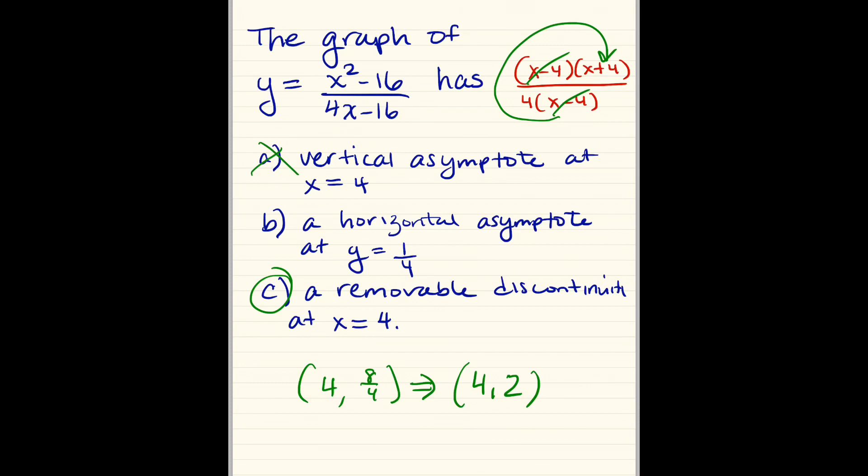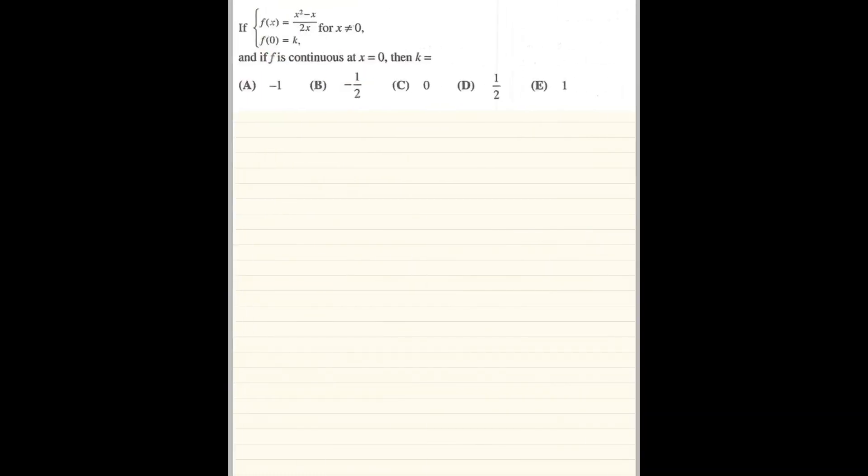So we have a removable discontinuity at x equals 4. We don't have a vertical asymptote. We would have had a vertical asymptote if they didn't cancel. A horizontal asymptote would have been 1 fourth if the denominator had a square there, because then they would match, and then you would reduce.